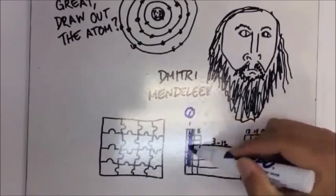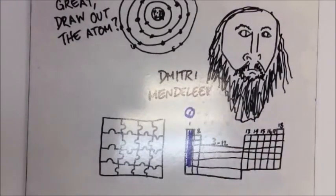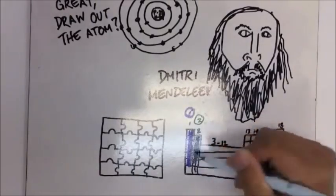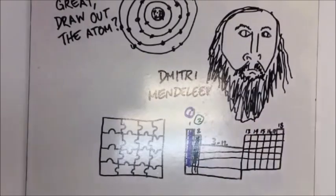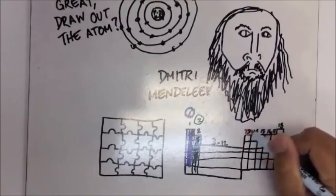When we're talking about the periodic table, it goes by groups. Everything in the first column has one valence electron. Everything in the second column has two valence electrons. We skip the transition metals.